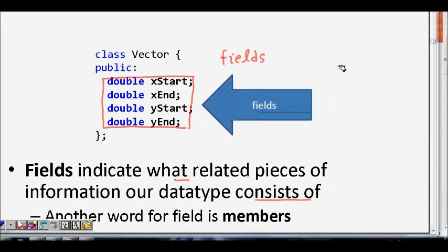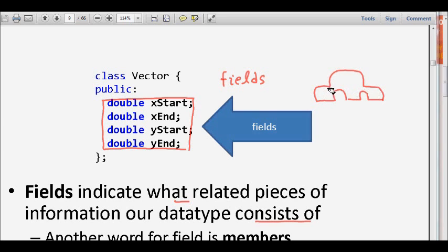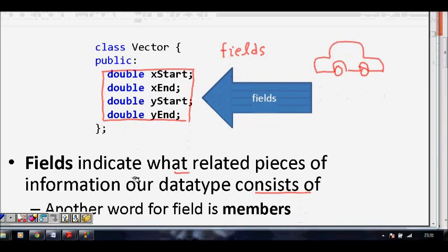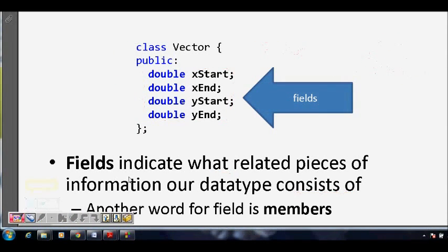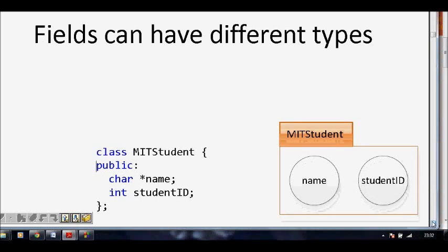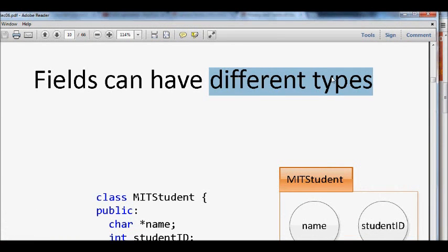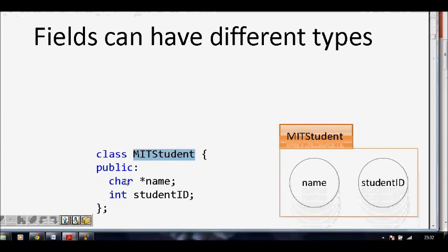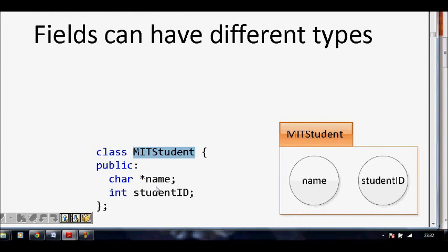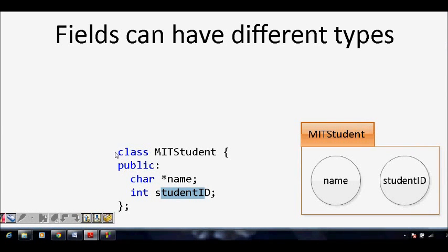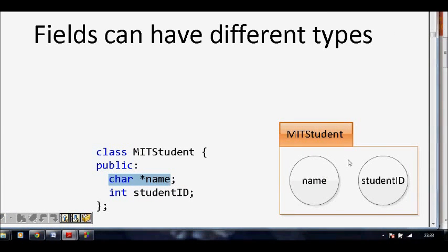Like a car — your car is made up of wheels, bonnet, handle, and gear. Those are the attributes or members of your class, which is car. Similarly, your vector has these members. Fields can have different types. For example, an MIT student class would have name of type char array, and student ID of type int. So it is not necessary that your members have the same type — they can have different types.